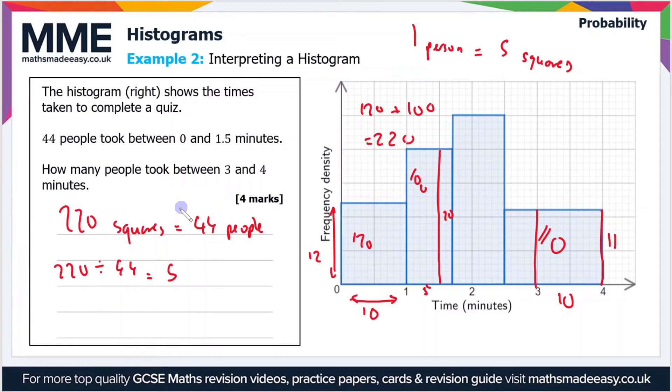So therefore between three and four minutes there are 110 divided by five. As one person is five squares and there's 110 squares, that gives us 22 people.